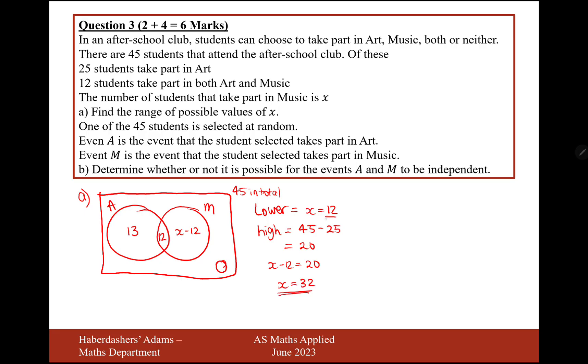So the range of possible values will go from 12 less than or equal to x less than or equal to 32. So there we are.